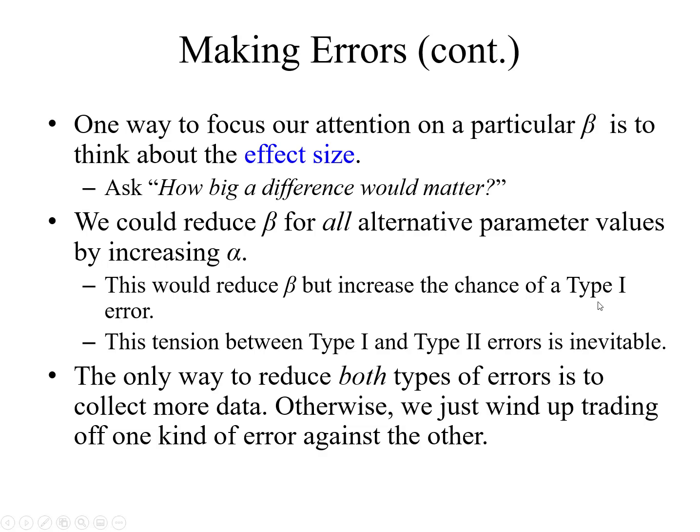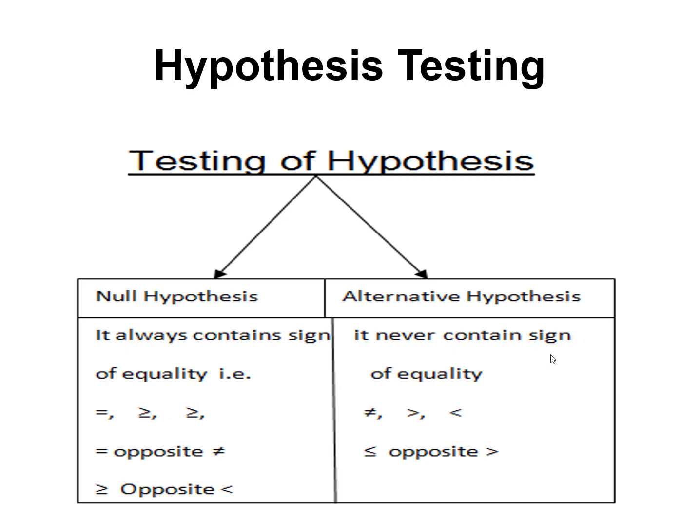The tension between type 1 and type 2 errors is inevitable. The only way to reduce both types of error is to collect more data; otherwise we just wind up trading one kind of error against the other. To further address this, inspectors sometimes conduct not only single sampling but double sampling, triple sampling, or multi-sampling. These sampling techniques further reduce the probability of error and risk.